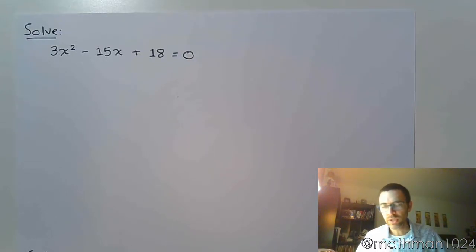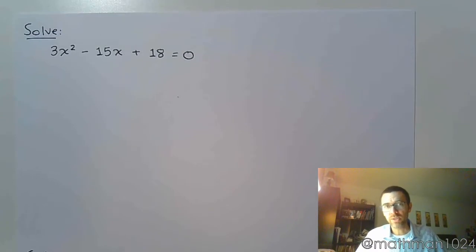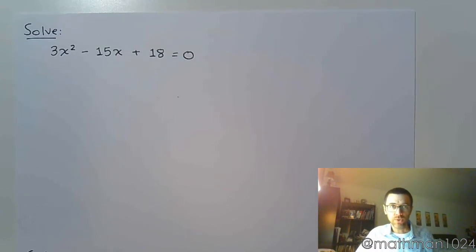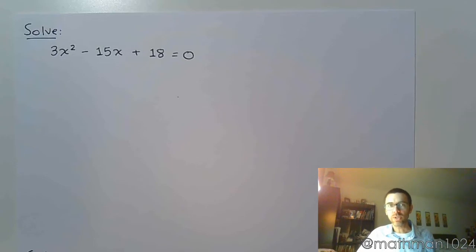Now let's take a look at this particular quadratic equation: 3x squared minus 15x plus 18. Good news for us is that this is already set equal to zero, we just need to factor this.